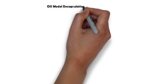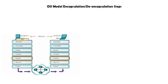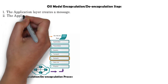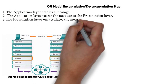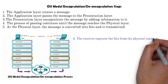OSI model encapsulation steps: for encapsulation, the application layer creates a message and passes it to the presentation layer. The presentation layer encapsulates the message by adding information to it, and this process continues until the message reaches the physical layer. At the physical layer, the message is converted into bits and transmitted.